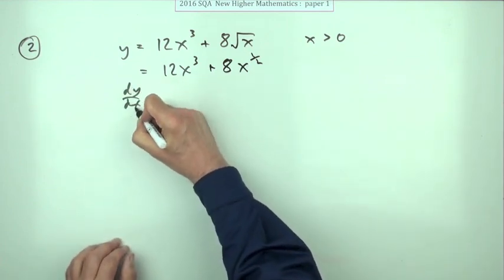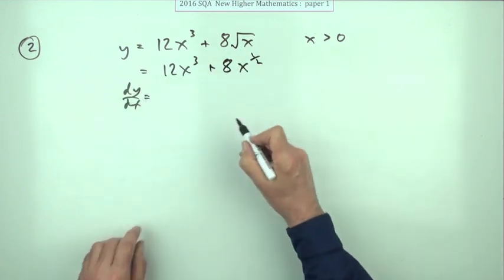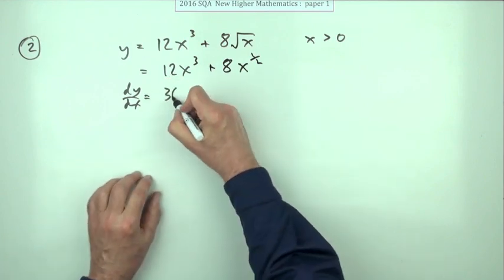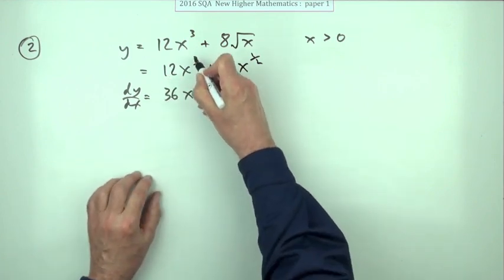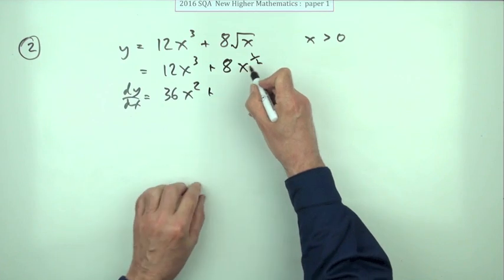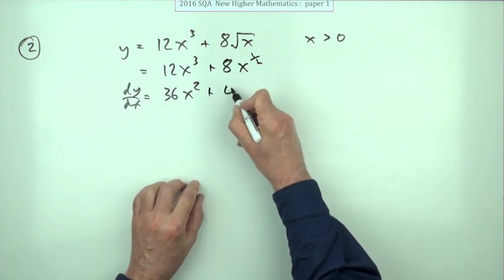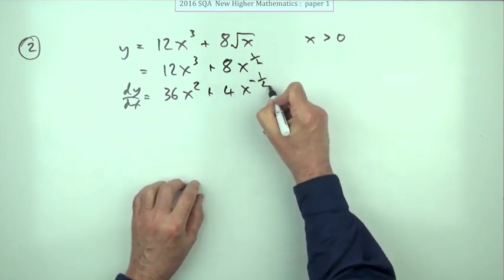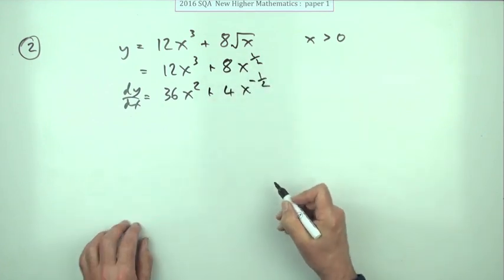So just differentiate using the normal technique: multiply by the power — that gives 36 — then take 1 off the power. Then multiply by the power — a half of 8 is 4 — and take 1 off the power, giving negative a half.